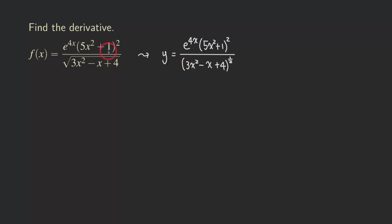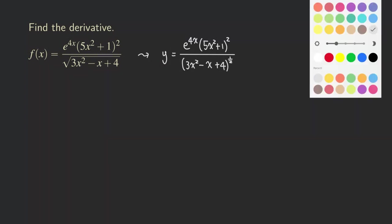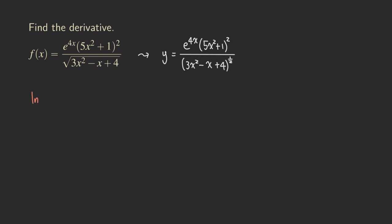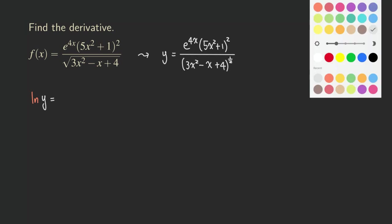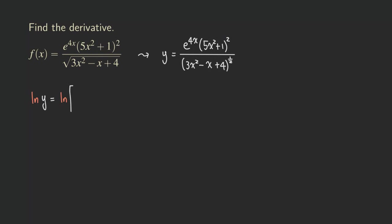So that's our first step — this is really just changing the notation, we're not doing any operations at all to this function. Now what we're going to do on both sides of this equation is take the natural log of both sides. So we have ln of y on the left, and then ln of all this stuff on the right. The y is inside the ln — this is not multiplication, we are doing function composition. All that stuff is actually being plugged into the ln function, so we are getting ln of e to the 4x, times 5x squared plus 1 squared, over that square root function.